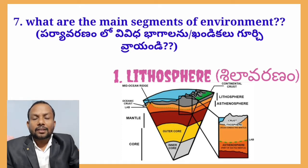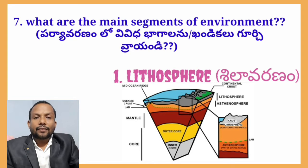There are also additional minerals found in the lithosphere, including silicon and iron, among others. Silicon and iron are among the most abundant elements in the earth's crust and are critical components of the lithosphere.